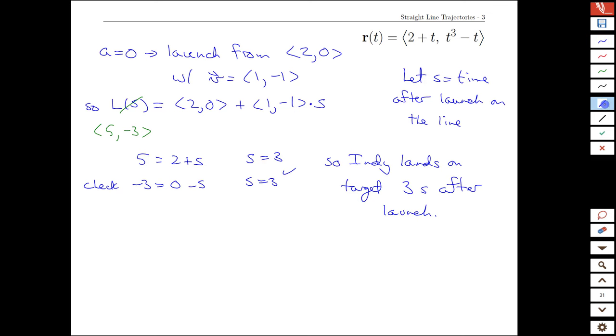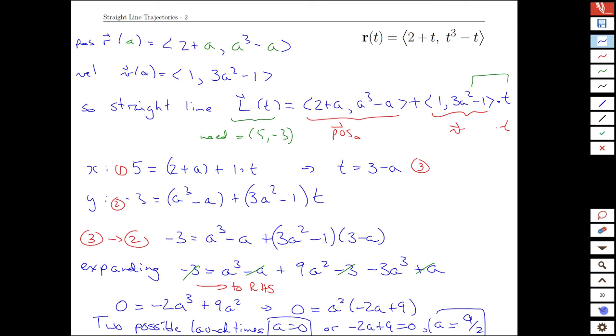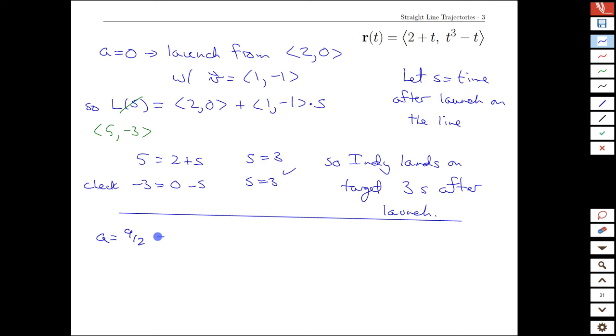All right, what about the other case, when our launch time on the original curve was 9/2? That gave a launch from (2+9/2), which will be 13/2. And this is a lot more complicated. Use your calculator for this if you need to. It ends up being 693/8. Totally intuitive.